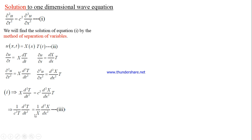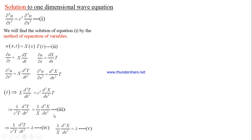In equation number three, the left-hand side depends purely on T and the right-hand side depends purely on X. This is the key idea of the method of separation of variables: since X and T are independent of each other, this equation holds only when both expressions are equated to the same real constant lambda. This converts the given partial differential equation into two ordinary differential equations.